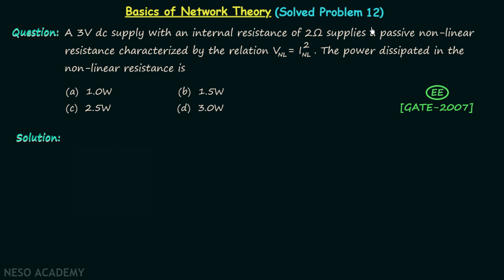We are going to solve our 12th problem. According to the problem, a 3-volt DC supply with an internal resistance of 2 ohms supplies a passive non-linear resistance characterized by the relation V_nL = I_nL². We are required to find out the power dissipated in the non-linear resistance. There are four options and we need to choose one correct option.